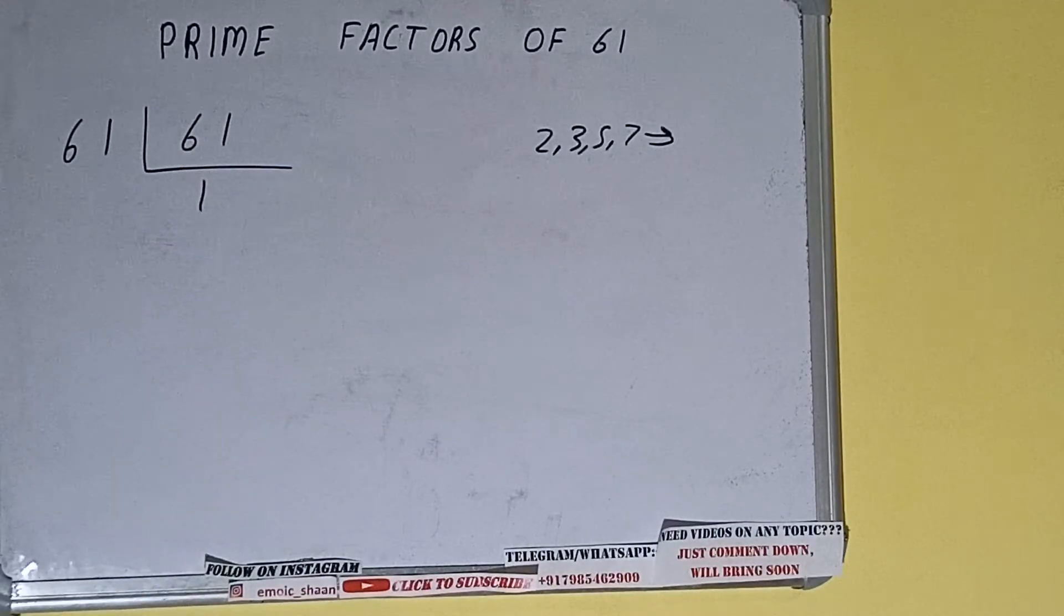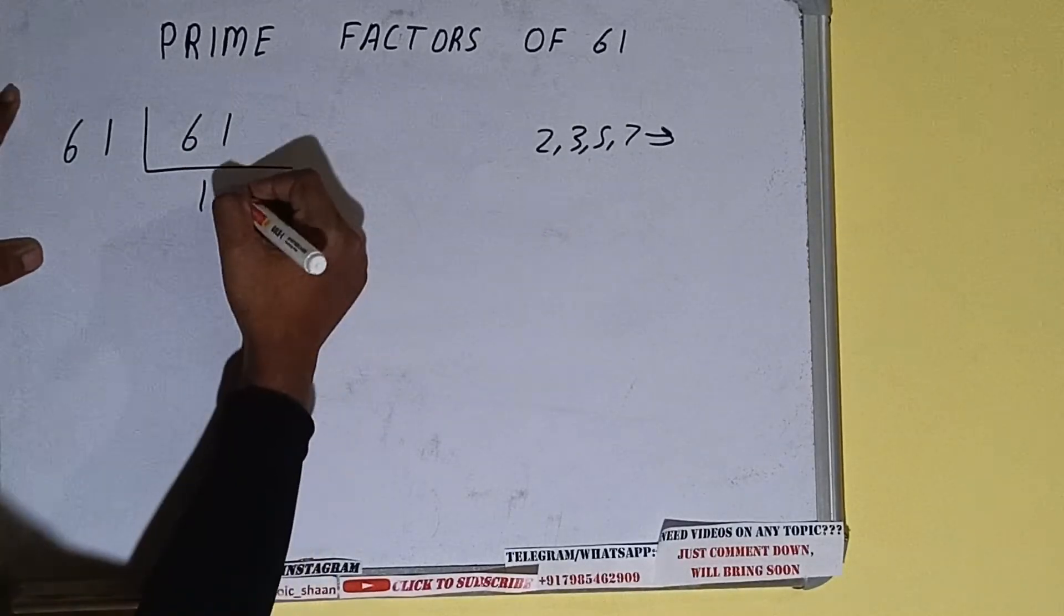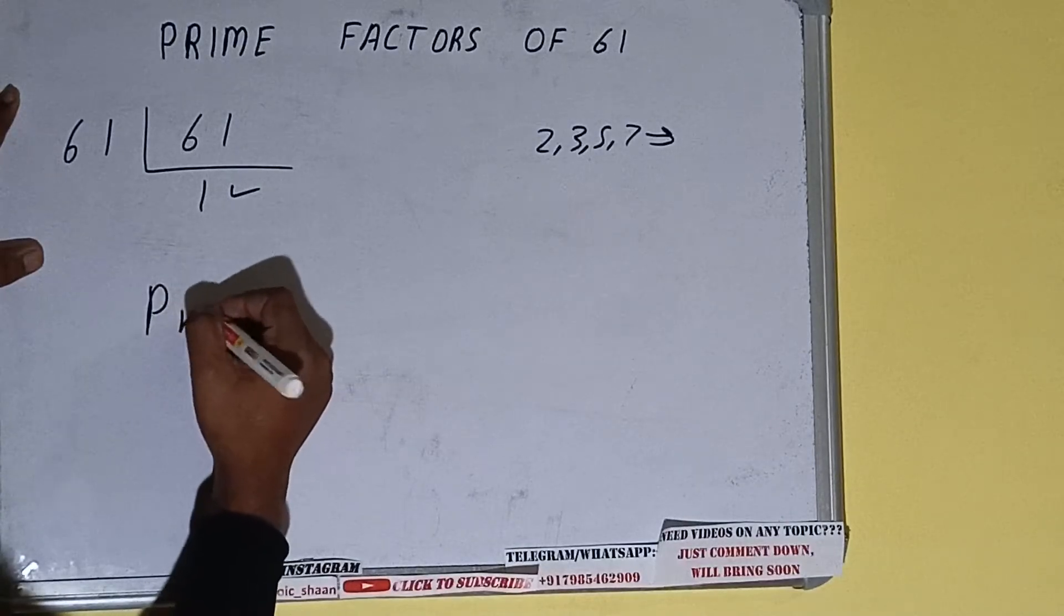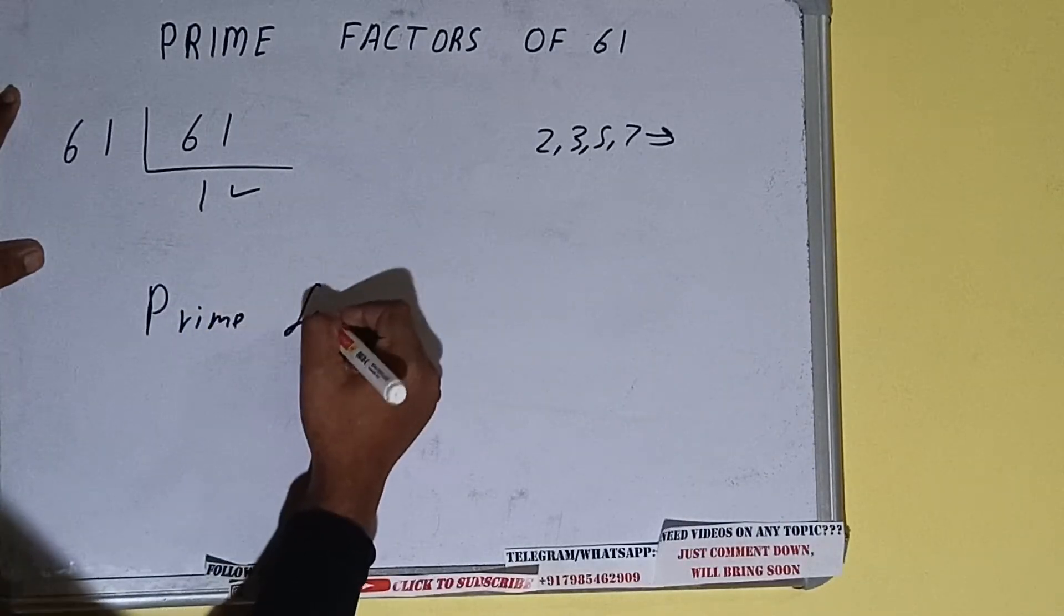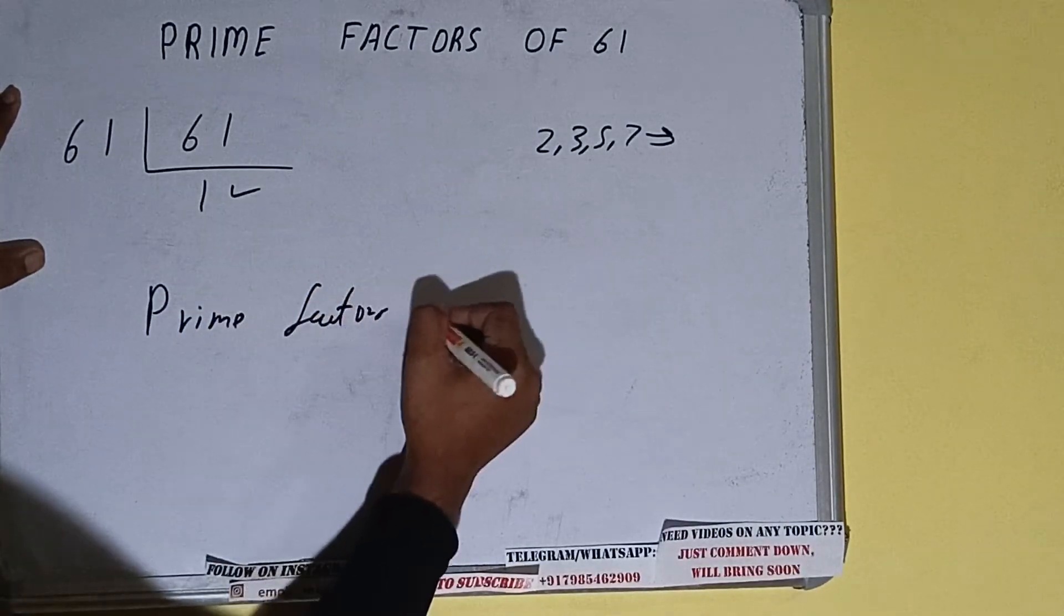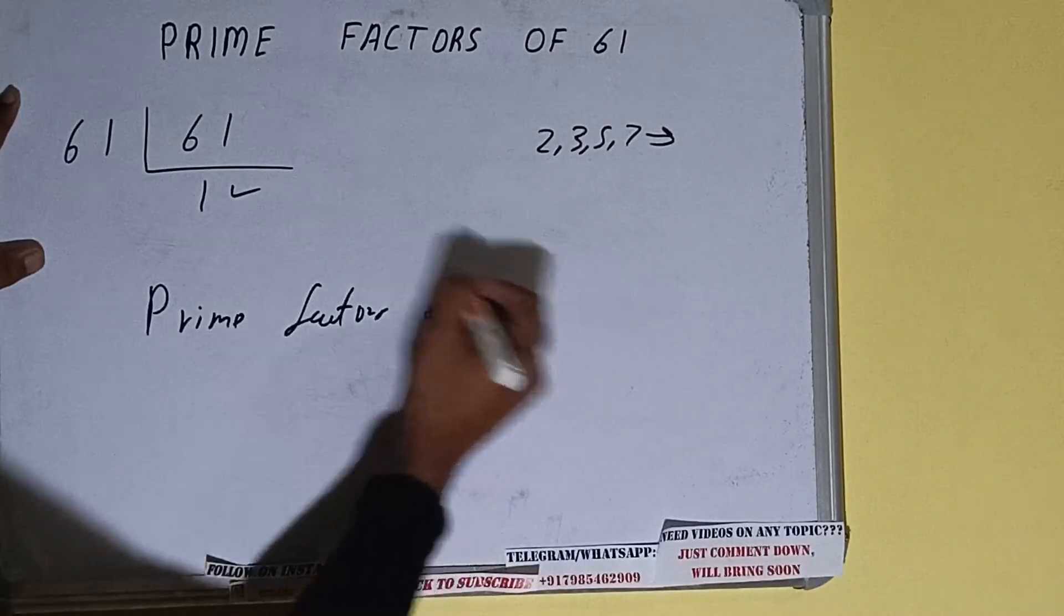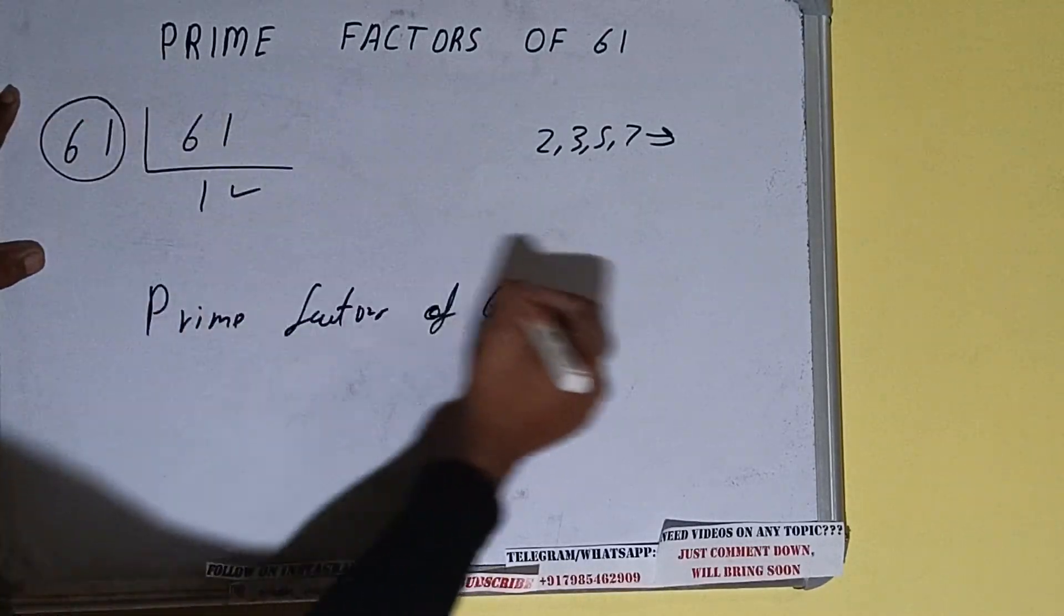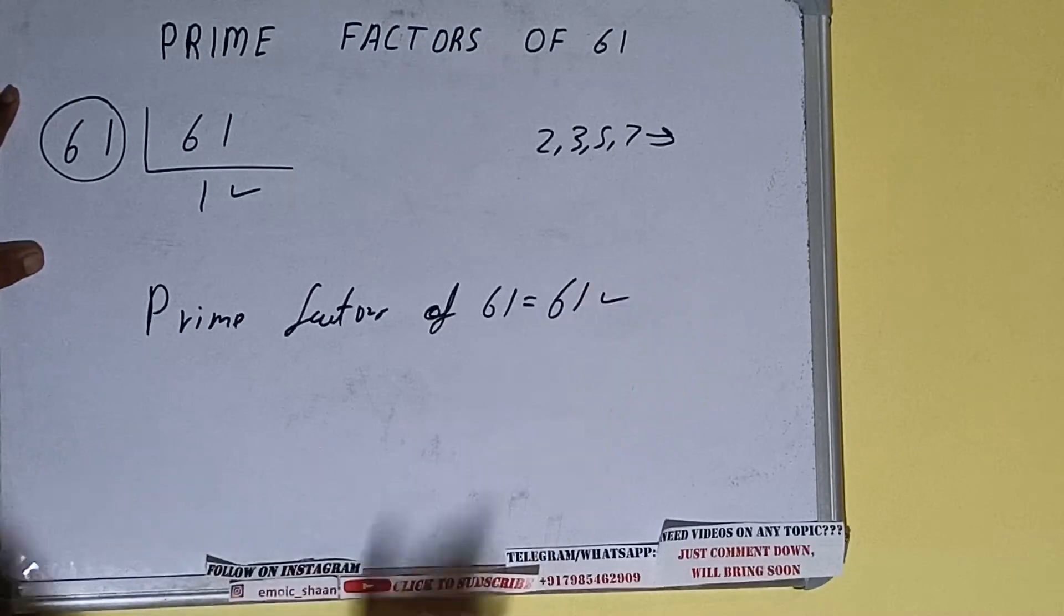...we'll be getting one. Once we get one, we need to stop and do one last thing. That is, prime factors of 61 is equal to whatever we have on the left-hand side, that is 61. That will be the answer.